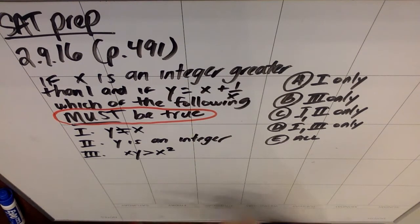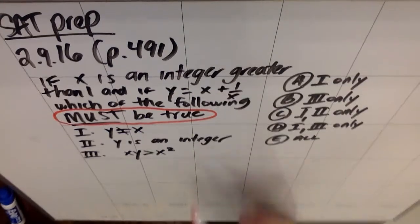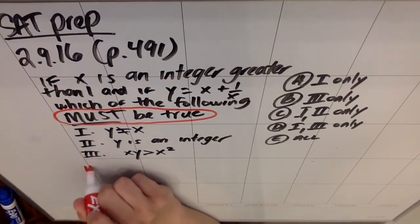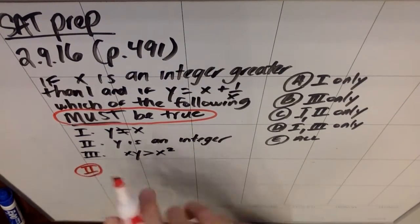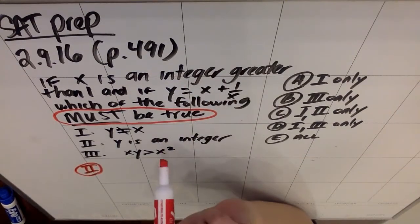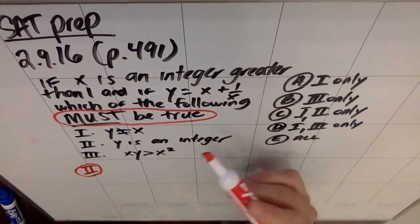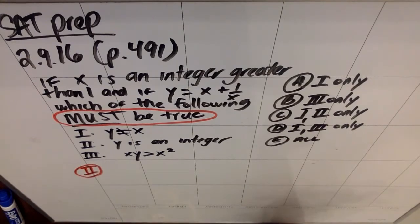Roman numeral two says y is not equal to x, which we'll get to in a minute. That one's actually going to be easier to look at the converse. The second one says y is an integer. Now I can disprove number two very quickly. So I'm allowed to pick any x that is greater than one. So all I have to do is pick an x greater than one and show that y does not come out to be an integer.